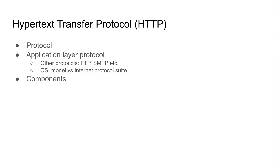Whenever we want to transmit data via a network using HTTP, we need a server and a client. One computer has some data, and the other computer wants to access that data — so we have a client making a request to a server. Simple.